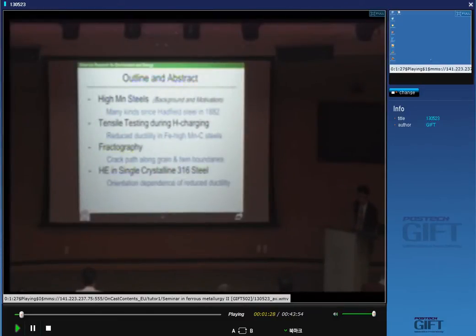This is the outline and abstract of my talk today. As background and motivation, many kinds of high manganese steels have been developed since Hadfield Steel in 1882. What I did is tensile testing and hydrogen charging, and I found reduced ductility in high iron-high manganese carbon steels.